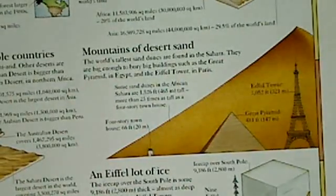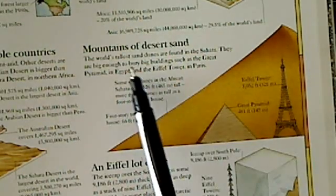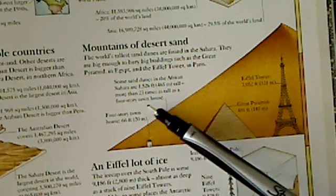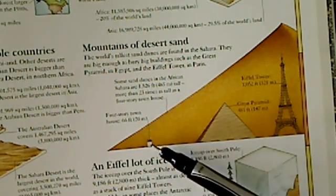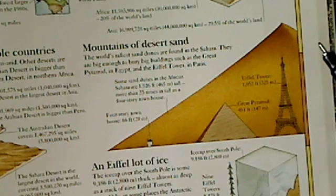Inside, it has all these cool pictures of all the comparisons. So, Mountains of Desert Sand. I don't know. Probably can't see the writings, but here's Eiffel Tower. Here's a typical four-story townhouse. And here's the sand in Sahara Desert.